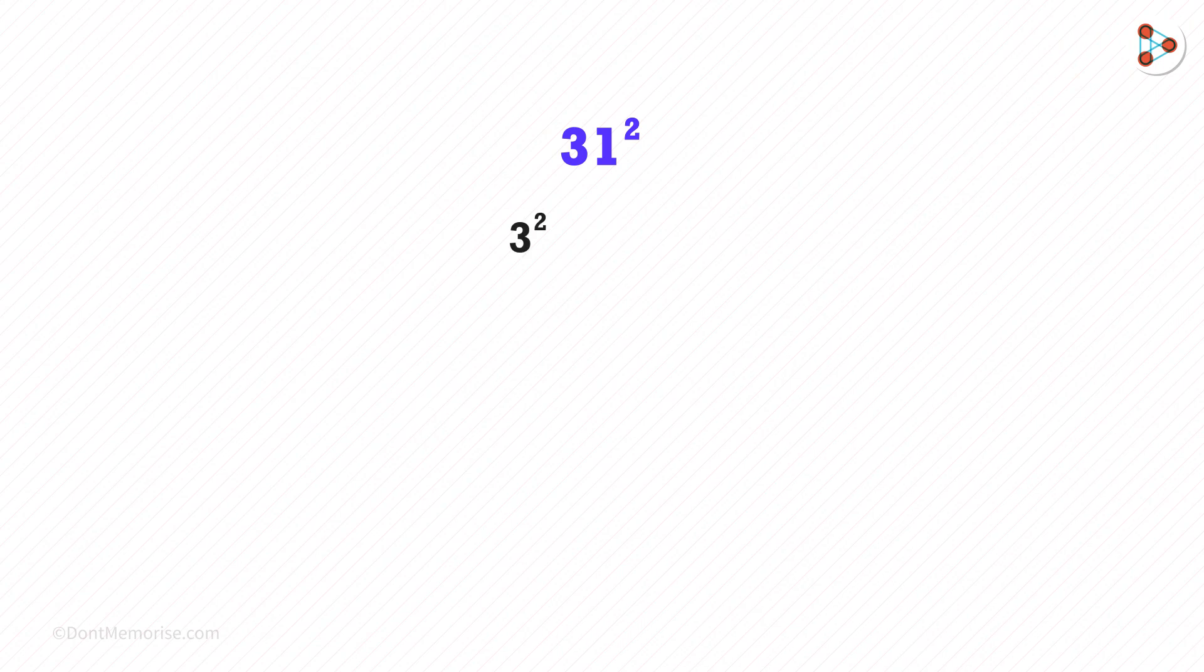On the left side, we will write 3 squared and make two lines. In the middle, it will be 2 multiplied by the digits. Here, the digits are 3 and 1. Therefore, it will be 2 multiplied by 3 multiplied by 1.